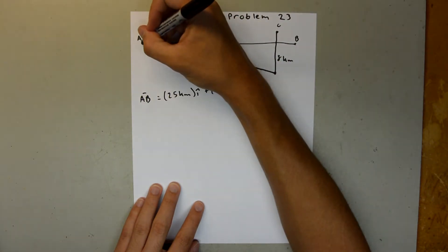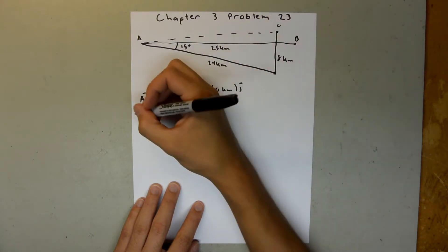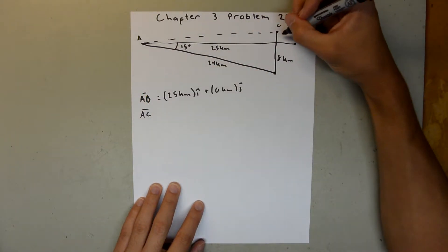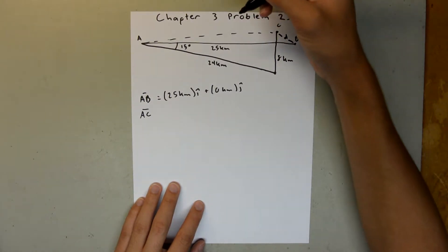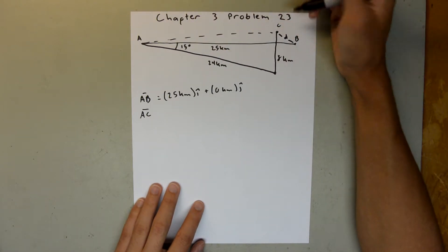And so, we need to find this vector here, which we can call AC. In the end, we're looking for this distance right here, so we'll call this distance D, but we're going to need this vector, so we can subtract one vector from the other to find that distance.